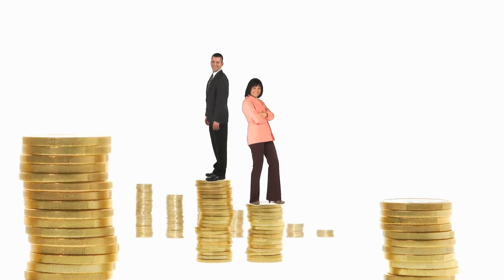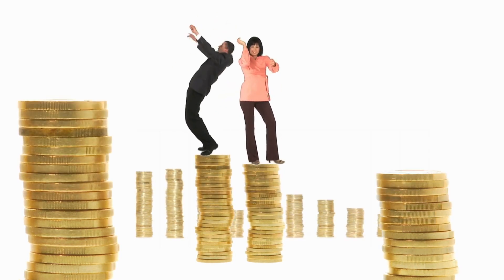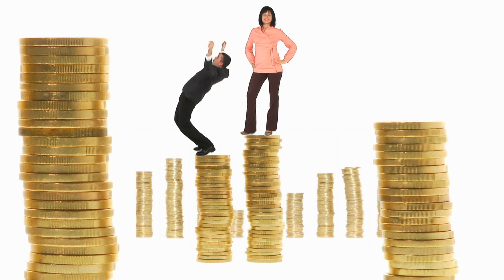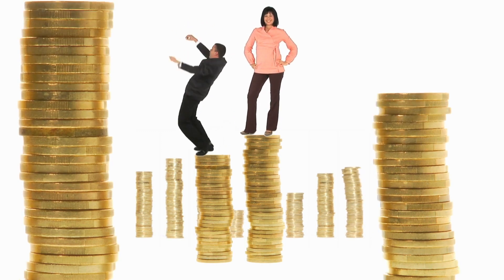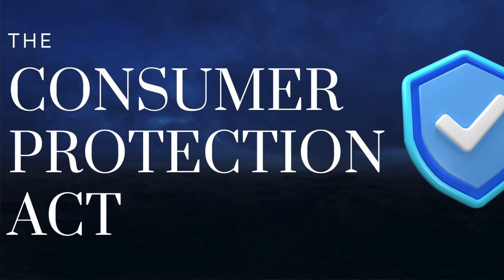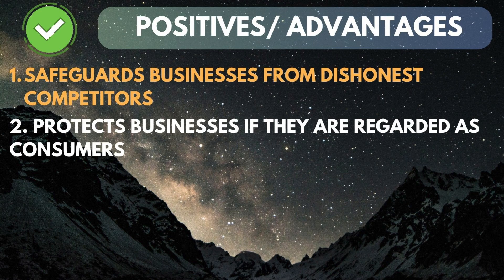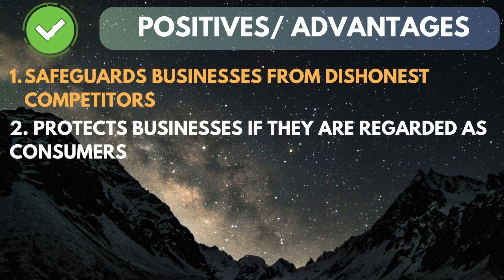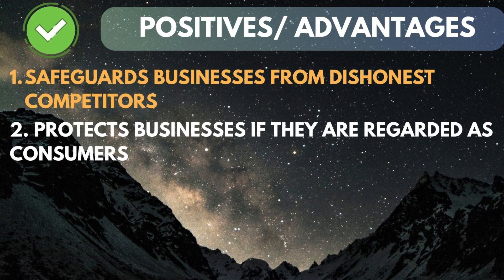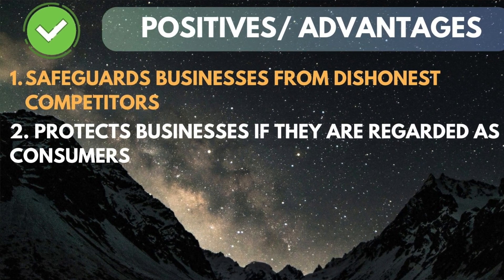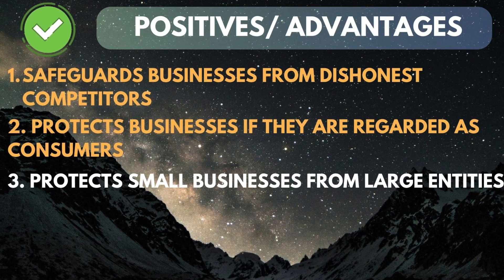When you are selling a product you've got competitors, and at times your competitors would like to mislead your customers. So businesses are protected or safeguarded from dishonest competitors. Our second point: the business may be protected if they are regarded as customers. At times businesses go and buy their raw materials, and when they are buying they are regarded as customers, so they are also protected.